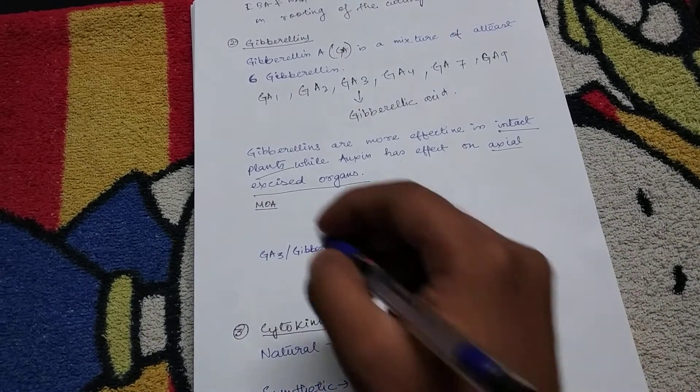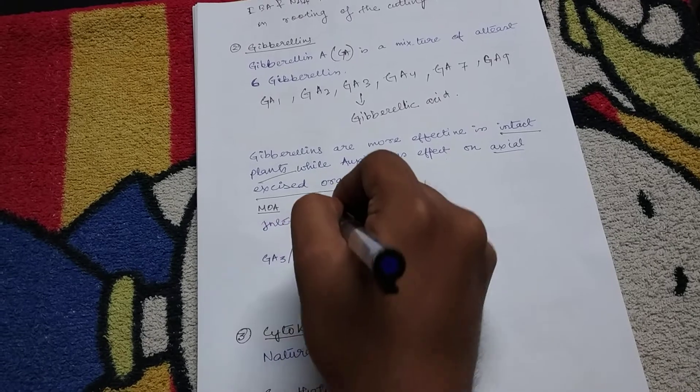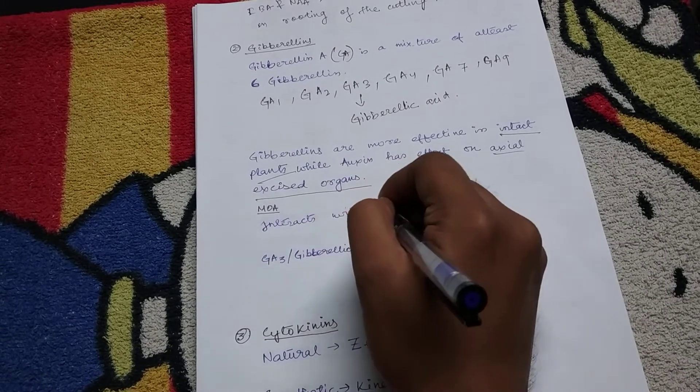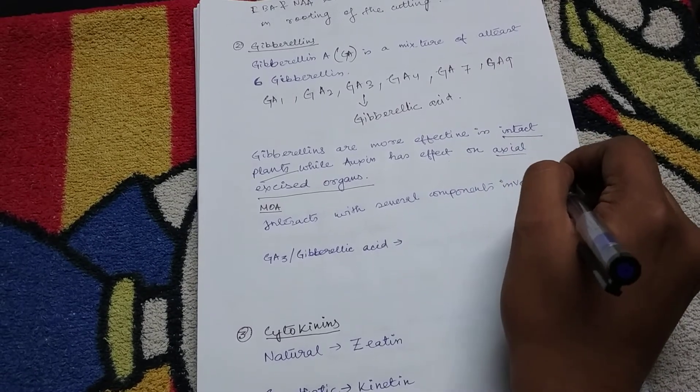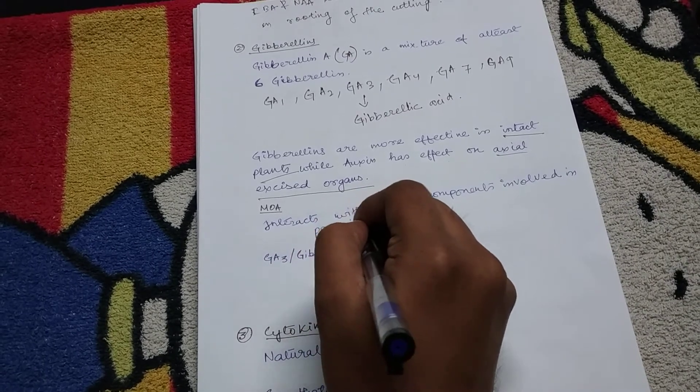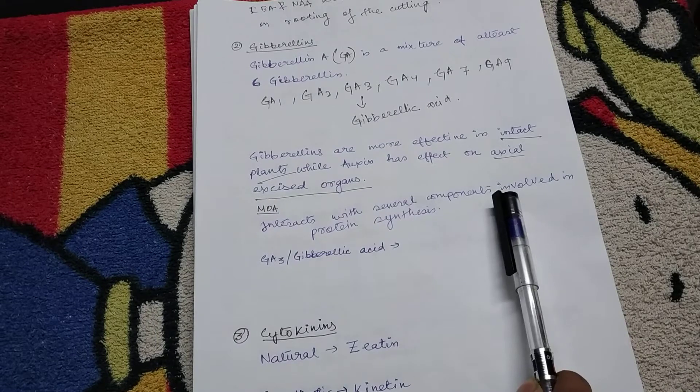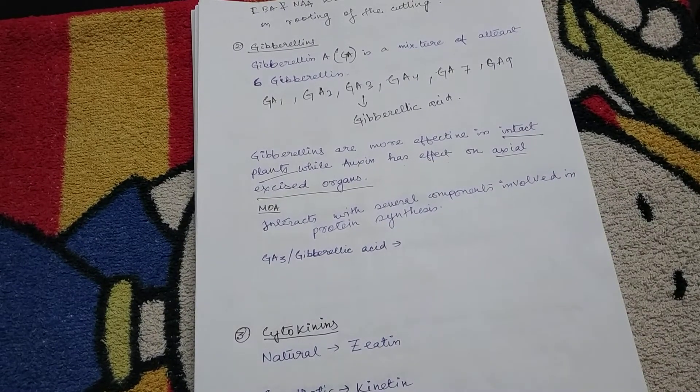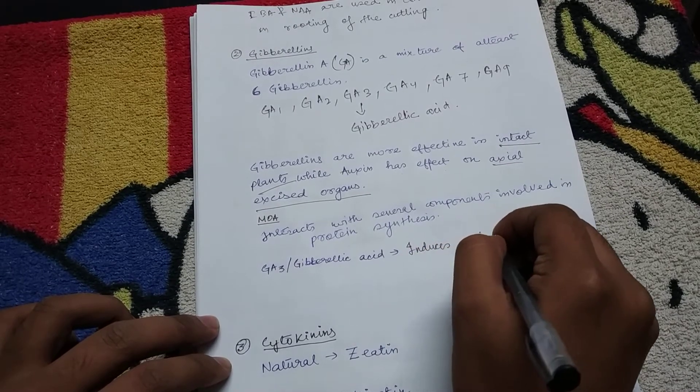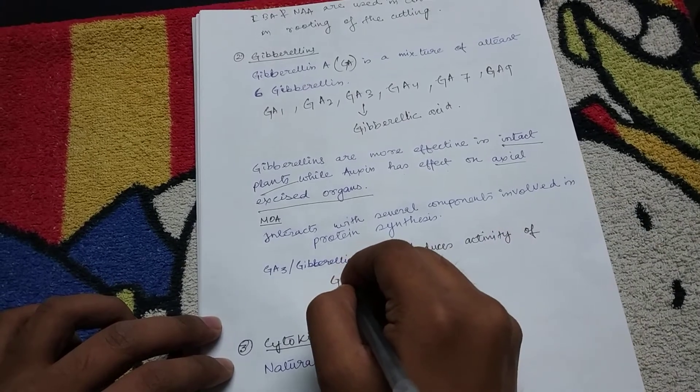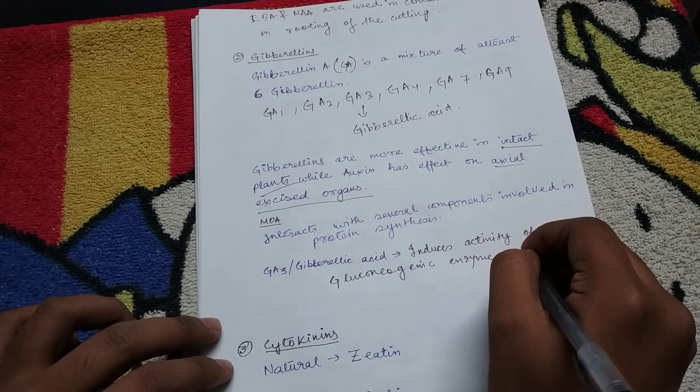Now what is the mechanism of action of gibberellin? It interacts with several components involved in protein synthesis. GA3 induces activity of gluconeogenic enzyme during germination. This is the action of gibberellic acid or GA3.